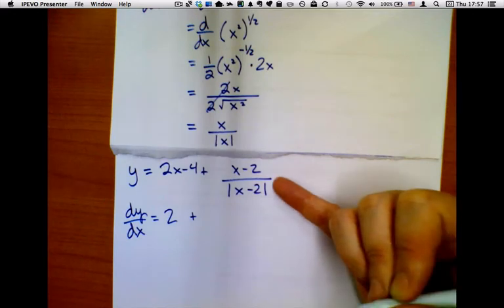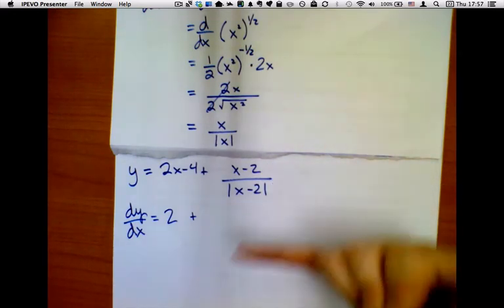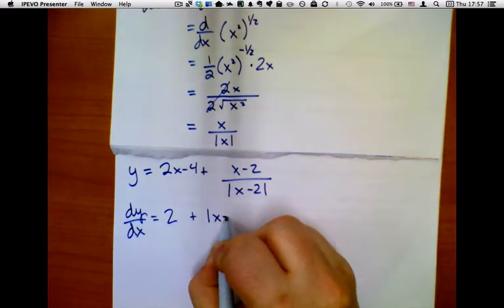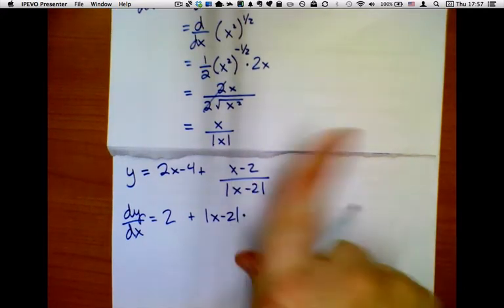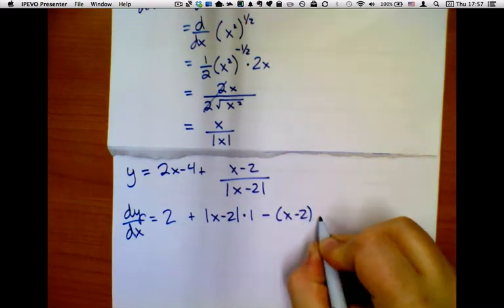Well, this thing is a quotient, so I'm going to use the quotient rule. Low d high minus high d low over low squared. So low, x minus 2, d high. Well, the derivative of the top is 1, minus high, d low.